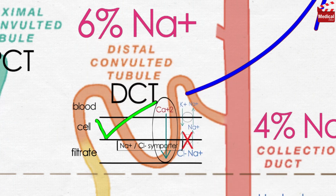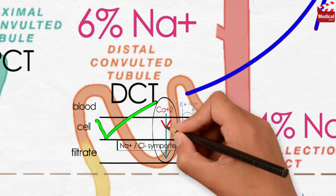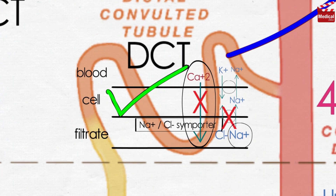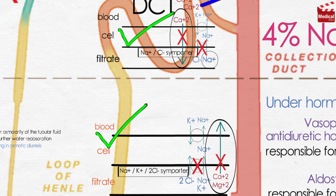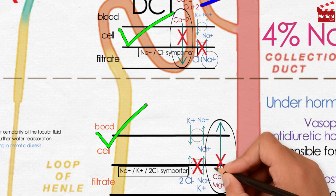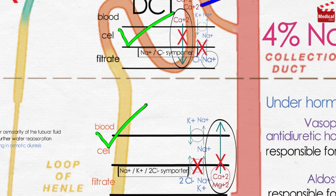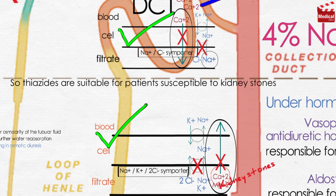When thiazides inhibit sodium reabsorption, they decrease calcium excretion in urine, causing hypercalcemia — in contrast with the loop diuretics, which increase the calcium concentration in the urine, causing kidney stone formation. So thiazides are suitable for patients susceptible to kidney stones.